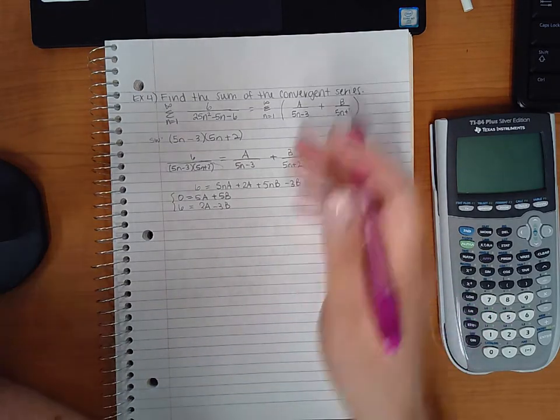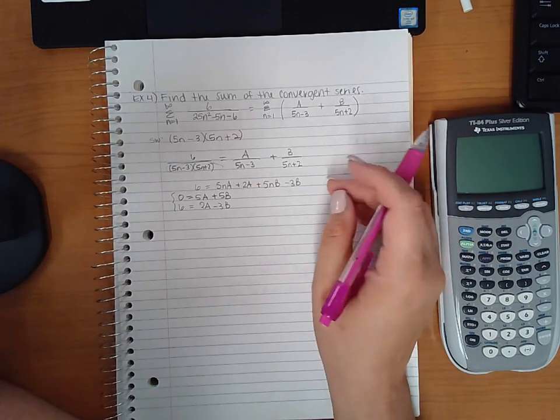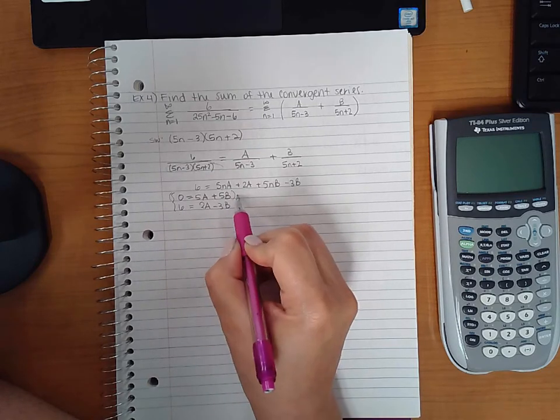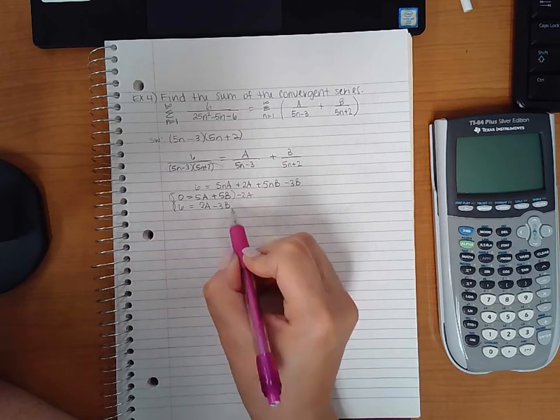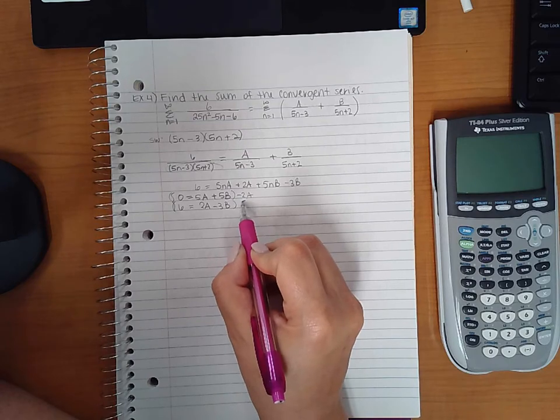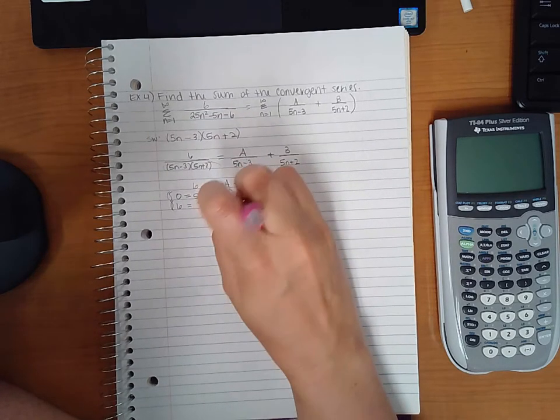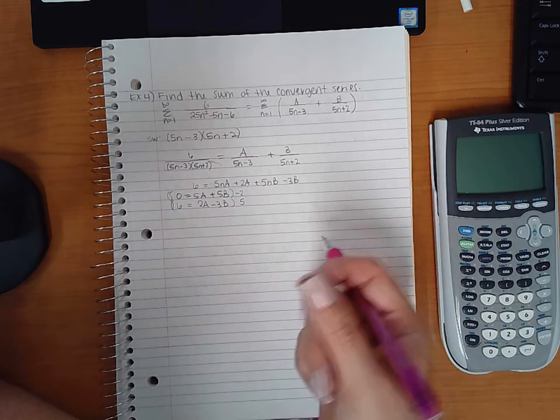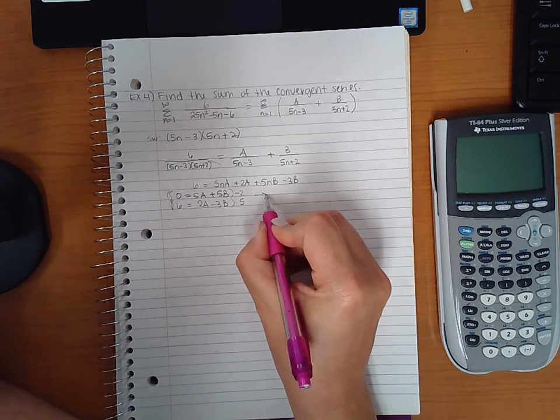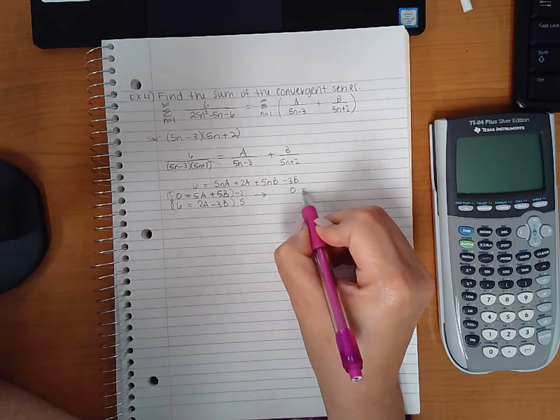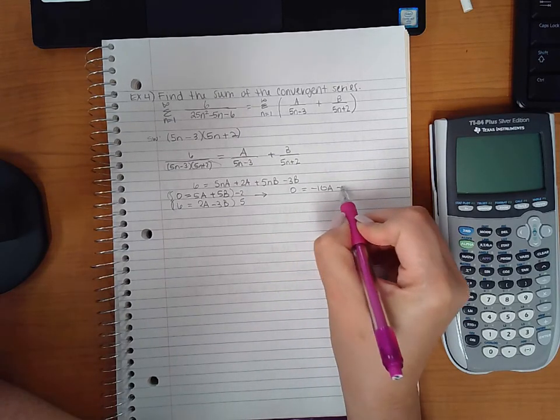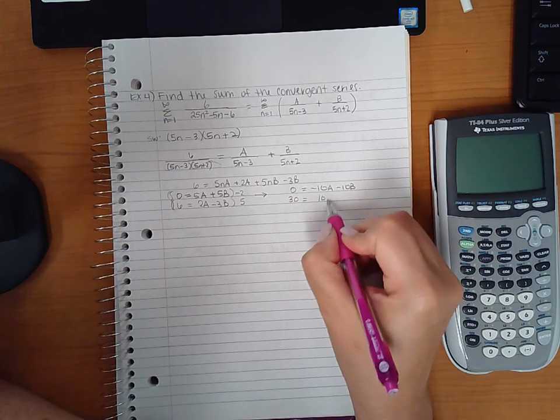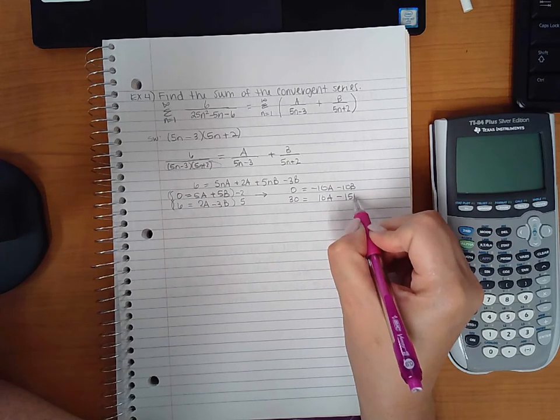I will multiply this equation by negative 2 and I'll multiply this equation by 5, so that these will both end up being 10s but with opposite signs. So this will lead me to 0 still, negative 10A, negative 10B, and then 30 equals 10A minus 15B.